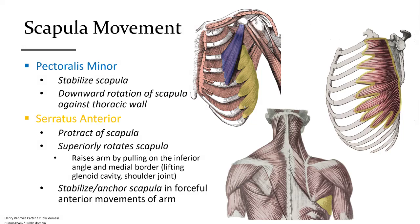The pectoralis minor is underneath the pectoralis major. The minor attaches to the coracoid process of the scapula and is mostly used for stabilization of the scapula, providing the base for any motion of the arm. The serratus anterior begins along the medial border of the scapula and wraps around anteriorly along the ribs. It also plays a role in stabilization of the scapula while the upper arm makes larger range of motion movements.